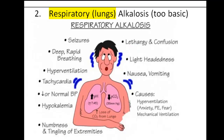The second condition is respiratory alkalosis. This is where the lungs remove too much carbon dioxide from the blood, therefore the pressure of the carbon dioxide in the lungs decreases. If there's a reduced amount of acid, that will cause a reduction in the hydrogen ion concentration, which will cause the pH to go up, creating an alkaline condition.